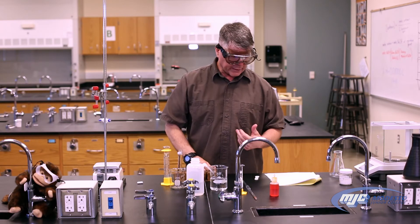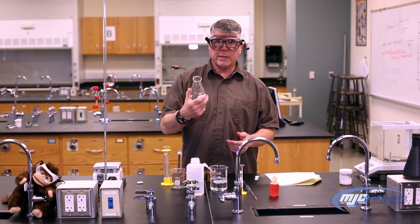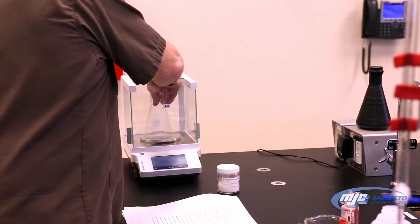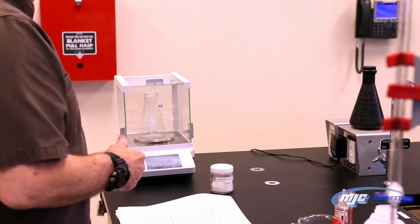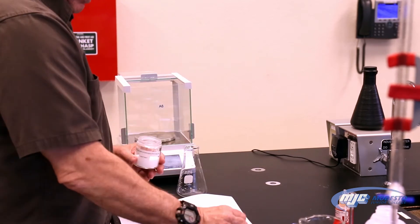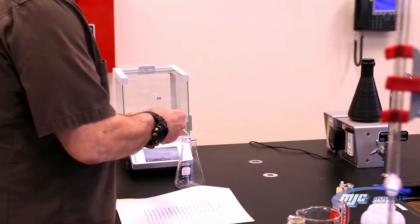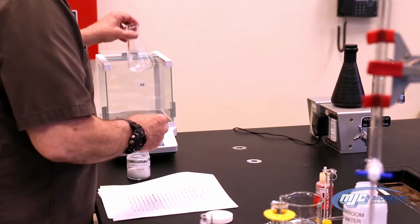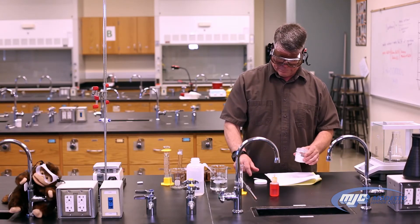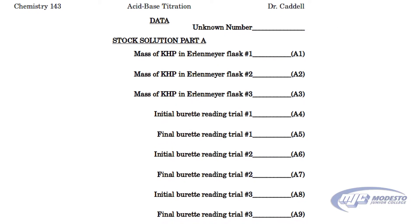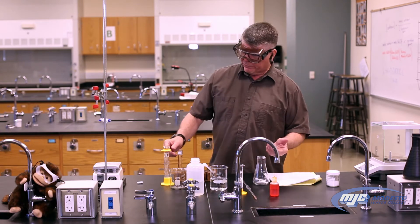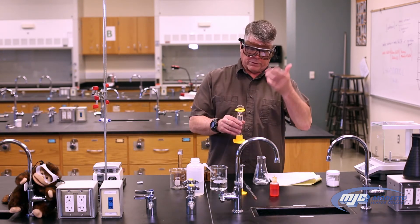The next thing we have to do is weigh out our KHP into our Erlenmeyer flasks. There are going to be three Erlenmeyer flasks — we do this part three times. We take an empty Erlenmeyer flask, put it on the balance, and tare the balance because we don't care how much the flask weighs by itself. Then we add somewhere between 1 and 1.2 grams of KHP — for example, 1.153 grams. Everyone's going to have a different number. That'll be flask A1, the second flask A2, and third flask A3. Then we add about 50 mL of deionized water — no need to measure carefully.